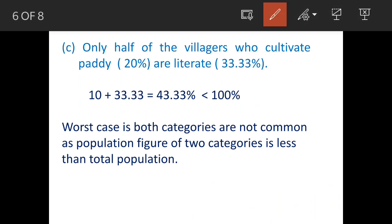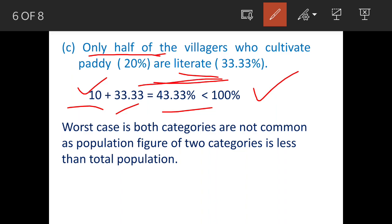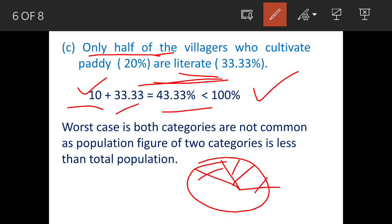Statement C: only half of the villagers who cultivate paddy are literate. Paddy cultivators are 20 percent, so half is 10 percent. Adding 33.33 percent literacy gives a total below 100 percent, meaning the 33.33 percent could include or exclude that 10 percent — both are possible. Since the statement is in definite terms and both outcomes exist, this option is also not correct.